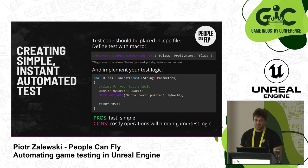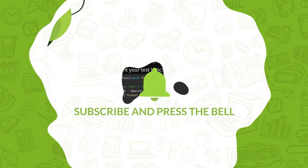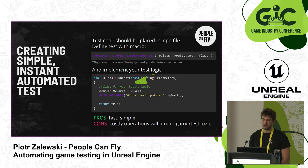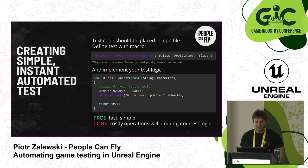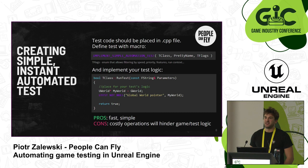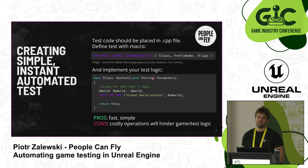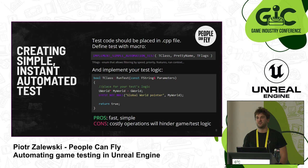These enums can be a combination — for example, you can specify that the test should run as a smoke test, meaning it will run on every single start of your editor or program. Or you can specify that this test is only meant to be run in editor context, so it won't be accessible in a regular build.